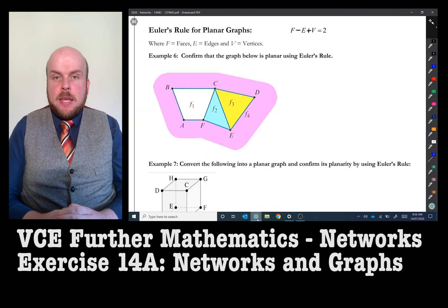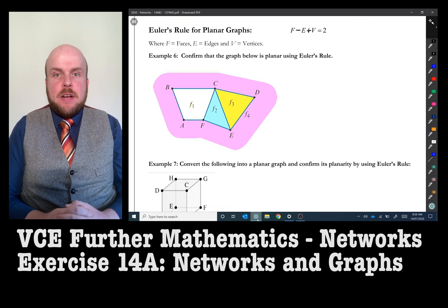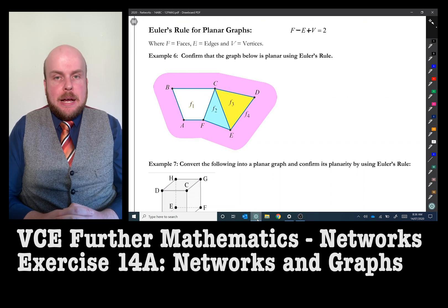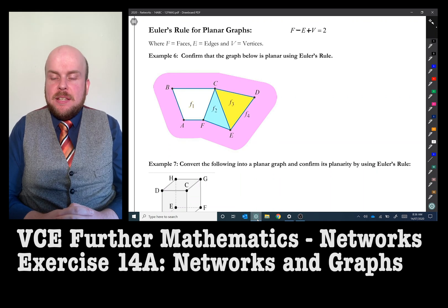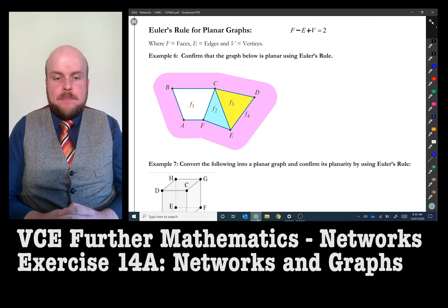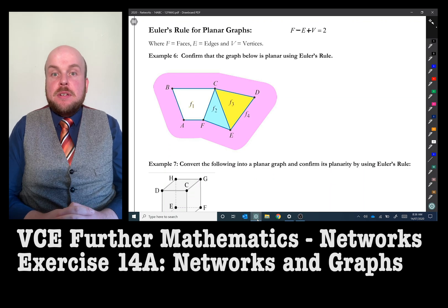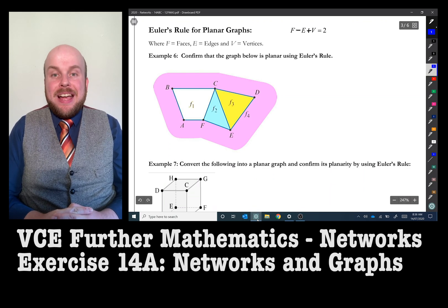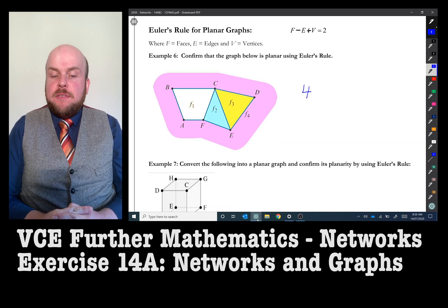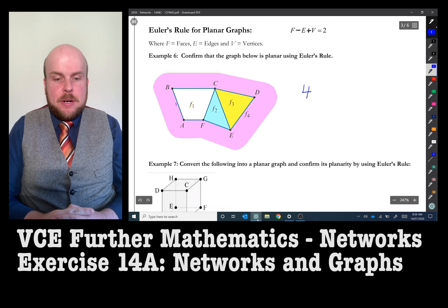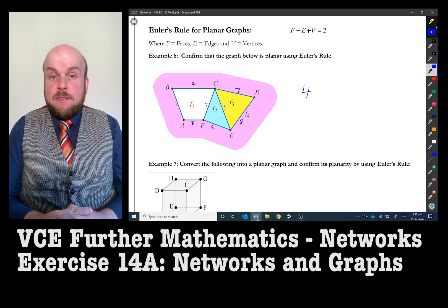Euler's Rule for Planar Graphs. We have a mathematical relationship that can help us determine if a graph is planar. If a graph is planar, if I take the faces, subtract the edges, and add the vertices, I should always get the answer of 2. A face is a region of the graph that is bounded by edges, or it is the area outside the network. So I'm here to confirm that the graph below is planar using Euler's Rule. There are 4 faces, indicated by that F1, F2, F3, and F4.